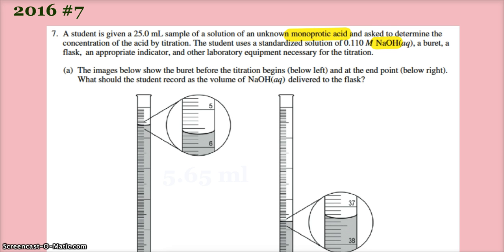A student is given 25 mL of an unknown monoprotic acid and asked to determine the concentration of the acid by titration. It's just got one hydrogen and we're using a standardized solution of 0.110 molar sodium hydroxide. One hydroxide, one hydrogen should be an easy calculation, so a one-to-one ratio.